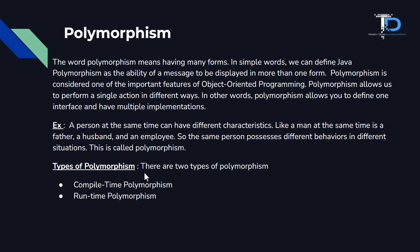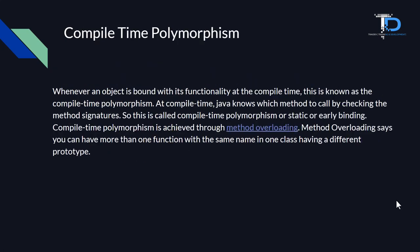Polymorphism is of two types: compile-time polymorphism and runtime polymorphism. Compile-time polymorphism is when an object is bound with its functionality at compile time. Java knows which method to call by checking the method signature. It is also called static or early binding, and is achieved through method overloading. Method overloading means you can have more than one function with the same name in one class but with a different prototype — meaning different parameters.